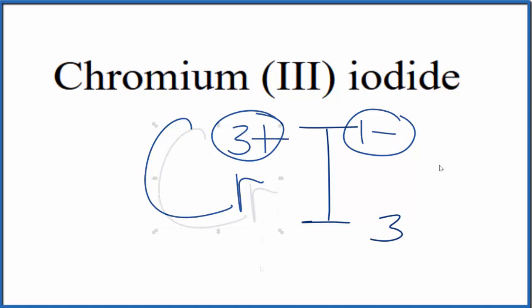So this is the formula for chromium (III) iodide: CrI3.